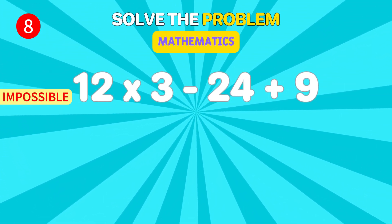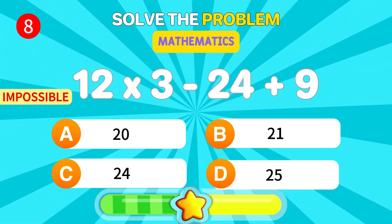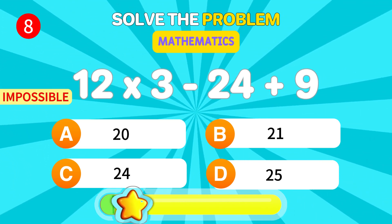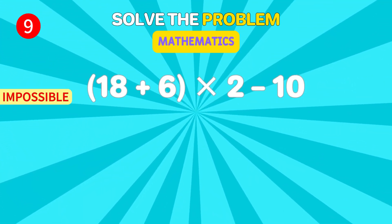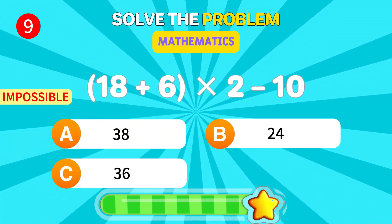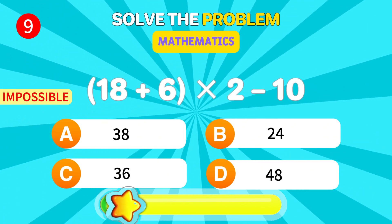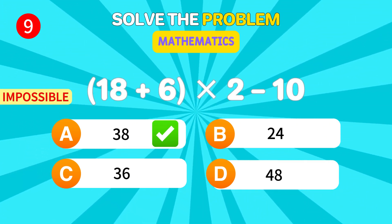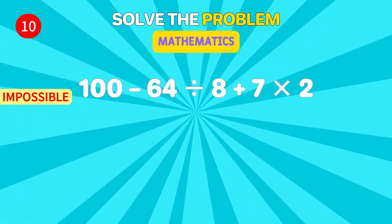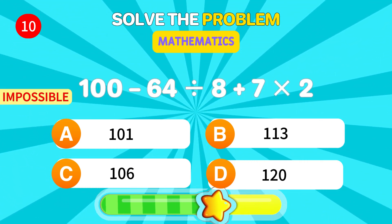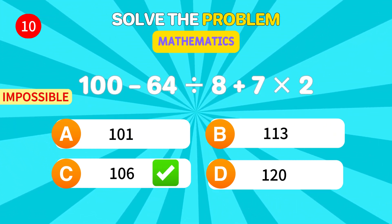Multiply 12 times 3, subtract 24, then add 9. 21. Incredible. Solve this. 18 times 6 divided by 2 minus 10. 38. Phenomenal. Finally, what is 100 minus 60 divided by 4 times 7 plus 2? 106. You're unstoppable.